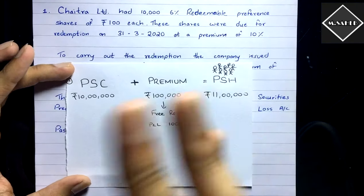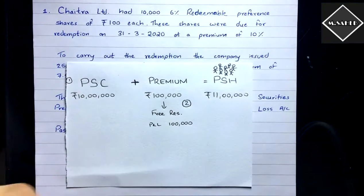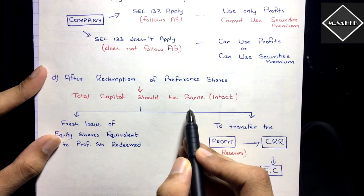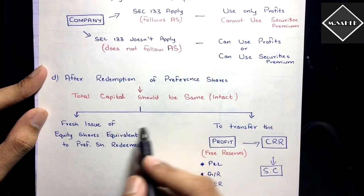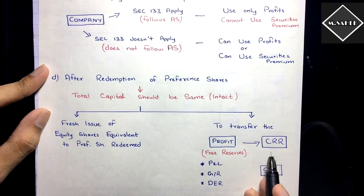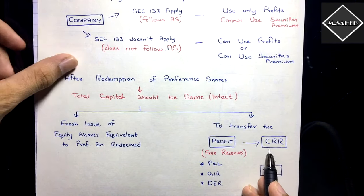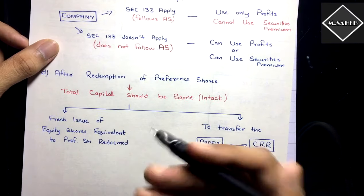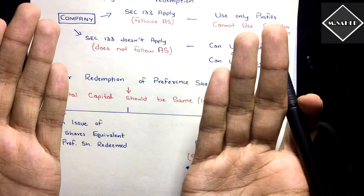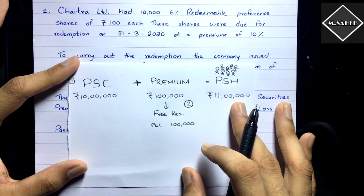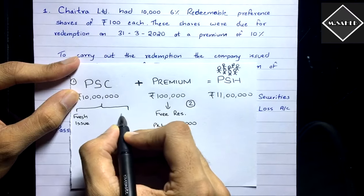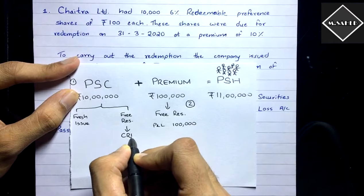Next, we must comply with Section 55, which says that even after redemption of preference shares, the total capital of the company should remain intact — this is called replacement of capital. We can do this either by a fresh issue of equity shares, or by transferring free reserves (such as Profit and Loss or General Reserve) to a special reserve called Capital Redemption Reserve (CRR).